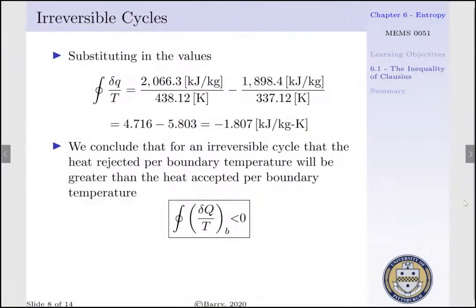Substituting our values — noting temperatures must be expressed in Kelvin — the cyclic integral of delta Q per T equals 2066.3 kJ per kg divided by our saturation temperature of 438.12 K, minus 1898.4 kJ per kg divided by our saturation temperature of 337.12 K. This gives 4.716 minus 5.083, or −1.807 kJ per kg·K. Note this value.